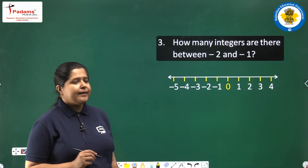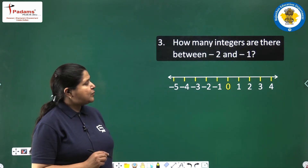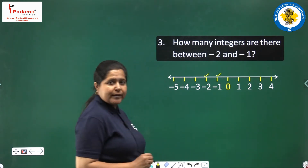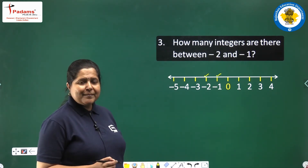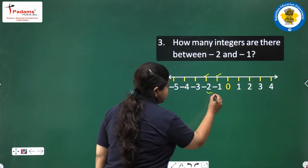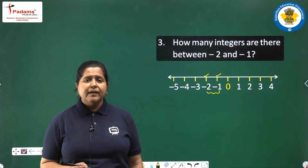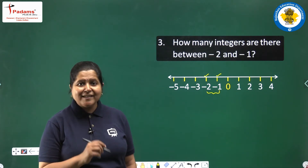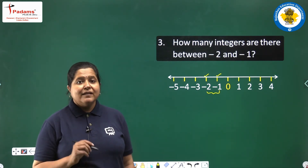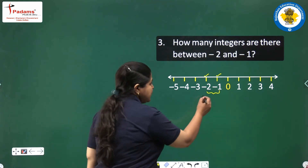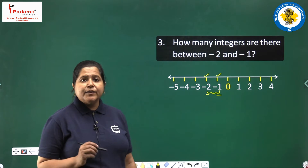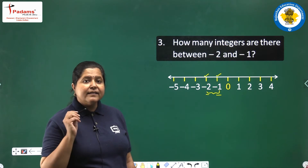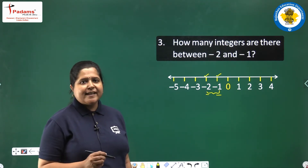One more question: how many integers are there between minus 2 and minus 1? This is minus 2 and this is minus 1. Can you find any integer between them? Of course not. There is no such integer between minus 2 and minus 1, or between any two consecutive integers. But this is not the case with rational numbers — between minus 2 and minus 1, there lie many numbers, and they are the rational numbers.